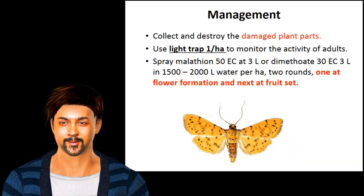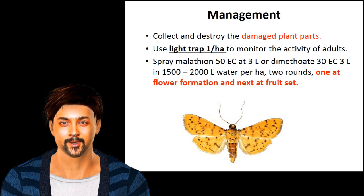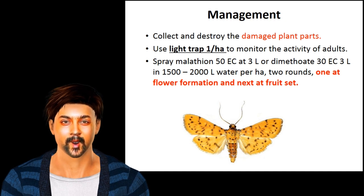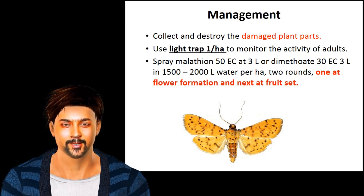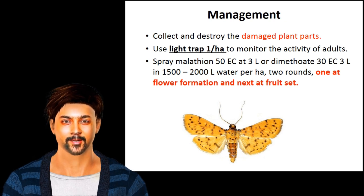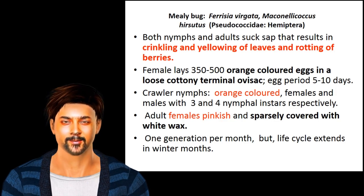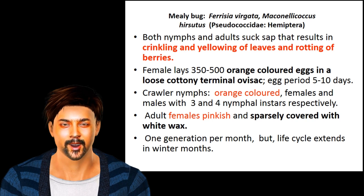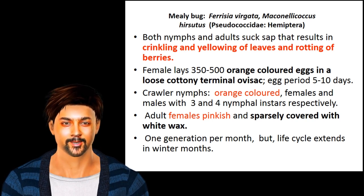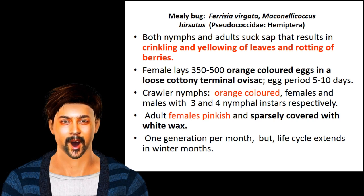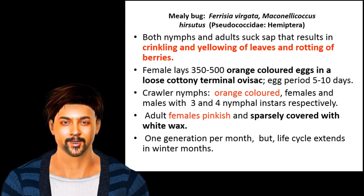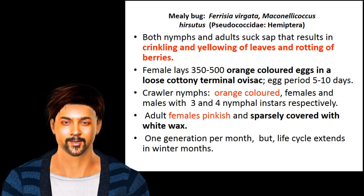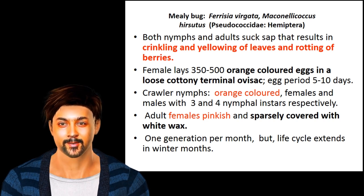The adult is medium-sized, bright orange-yellow colored with numerous black dots. The life cycle is completed in 25 to 33 days. For management, use a light trap at one per hectare and collect and destroy damaged plant parts. You can also use malathion, dimethoate as chemical control. Mealy bug — Ferrisia virgata and Maconellicoccus hirsutus, family Pseudococcidae, order Hemiptera — both species cause particular damage to guava crop.